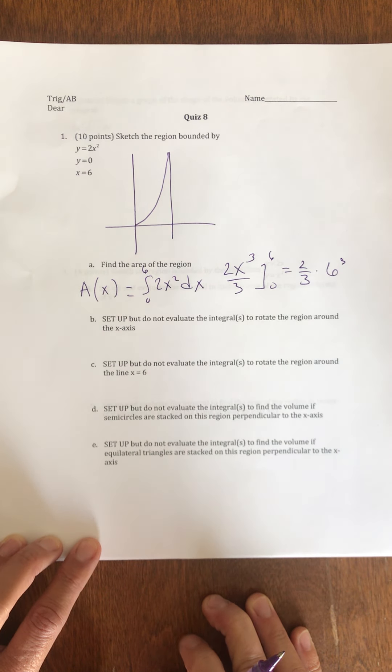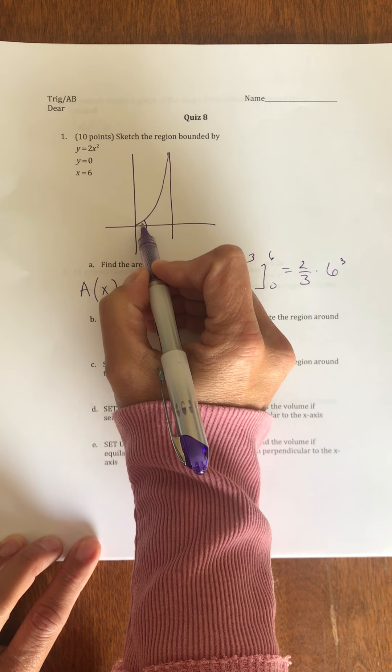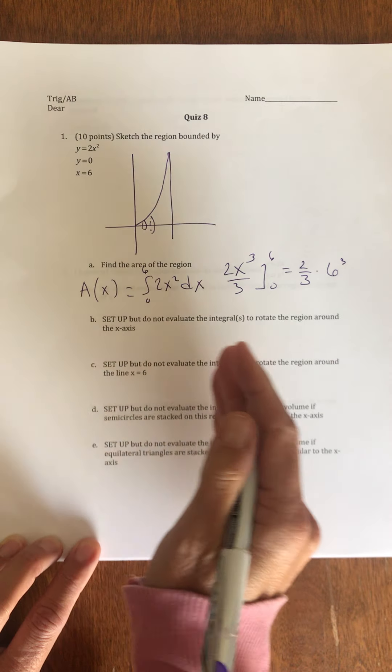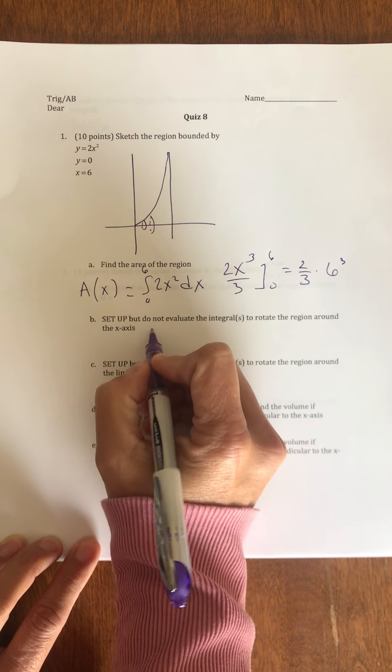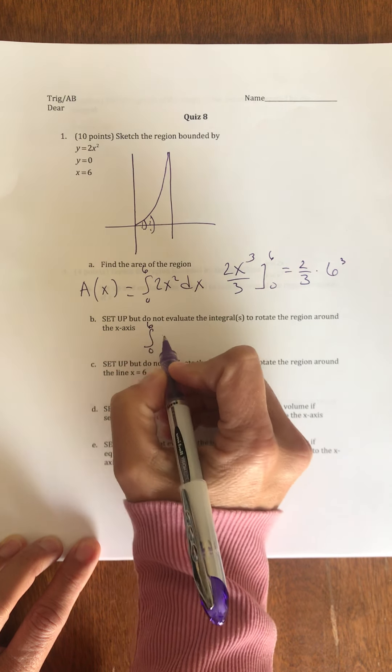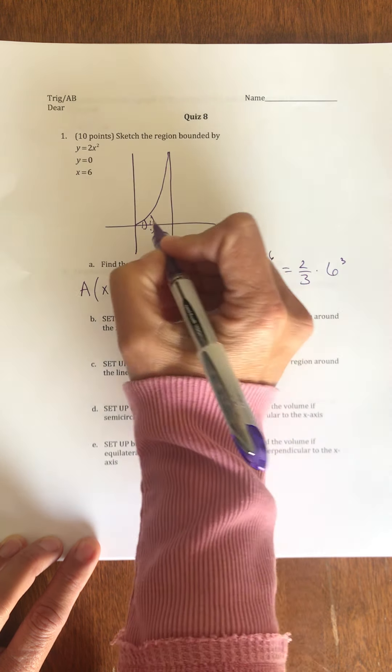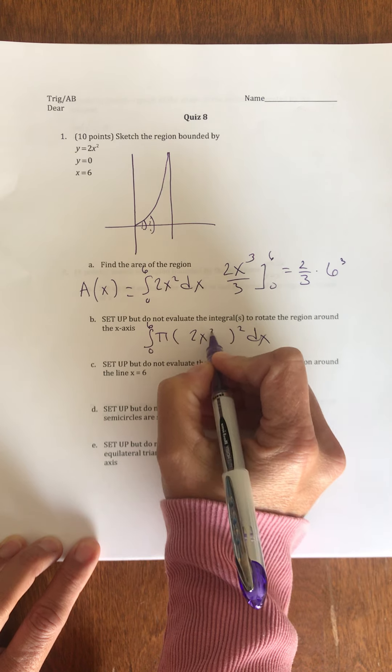To rotate this around the x-axis, it's going to make this adorable little funnel. I'm obviously going to stack these in the x-direction. My x-values go from 0 to 6 of pi r squared in the x-direction. My radius is just 2x squared.